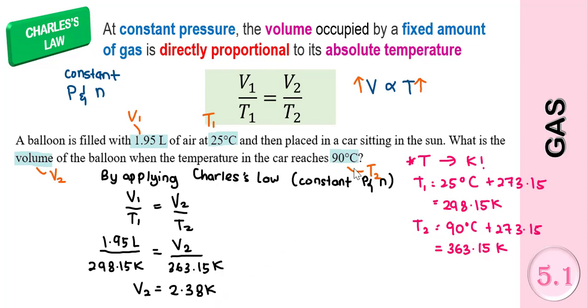So at 90 degrees Celsius, the volume will expand to 2.38 litres. This confirms that the higher the temperature, the larger the volume.